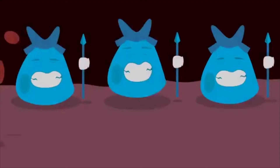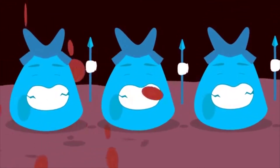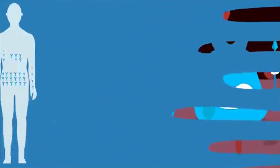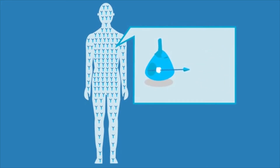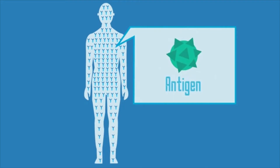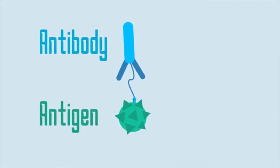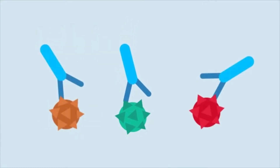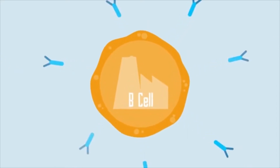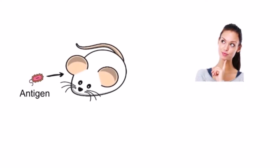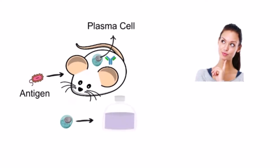In this video we will learn about hybridoma technology. Hybridoma technology is used for the production of a large number of monoclonal antibodies against a particular antigen. These monoclonal antibodies are produced by white blood cells, also called plasma cells. Whenever an antigen enters the body, B cells or B lymphocytes get activated and are converted into plasma cells, which secrete antibodies against that particular antigen. Plasma cells can be cultured in artificial media, but the biggest problem is that their lifespan is very short.